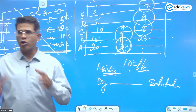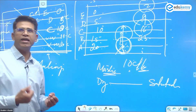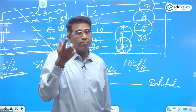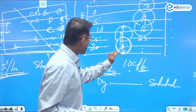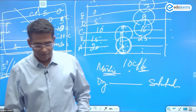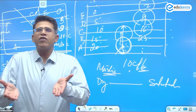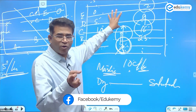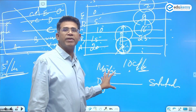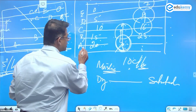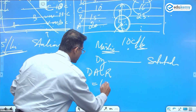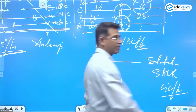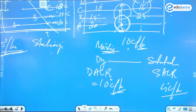Which type of air absorbs more heat — moist or dry? Moist air, because water can absorb more heat. So if there is moisture in the air packet, the rate of cooling will be less — the air remains warm for a longer time. If the air is dry, it cools faster. The rule: the Dry Adiabatic Lapse Rate (DALR) is 10°C per kilometer, and the Saturated Adiabatic Lapse Rate (SALR) is 4°C per kilometer.